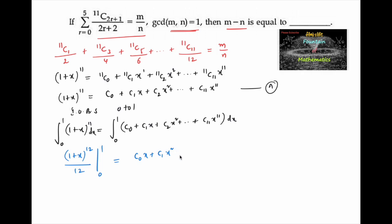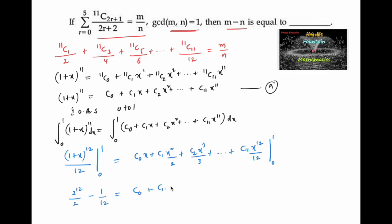Applying the limits: (2^12)/12 minus (1^12)/12 equals C0·1 + C1·(1/2) + C2·(1/3) + ... + C11·(1/12). This simplifies to (2^12 - 1)/12 = C0/1 + C1/2 + C2/3 + ... + C11/12. Let us call this Equation B.